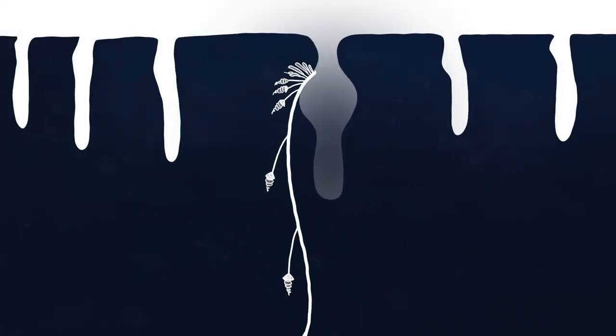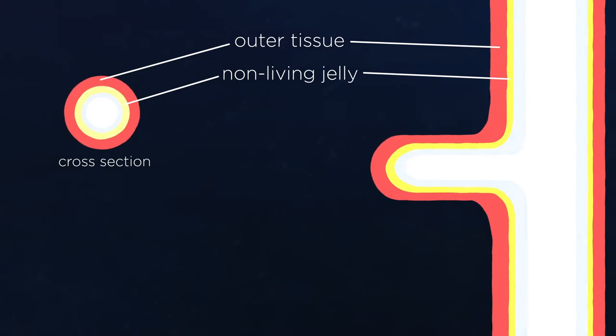Tentilla bud at the base of the tentacle and develop as the tentacle growth pushes them further away from the base. When they bud, tentilla are just a simple tube of outer tissue, jelly, and inner tissue.